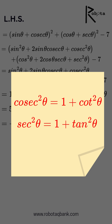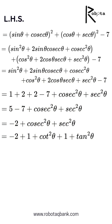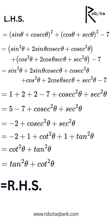And sec²θ = 1 + tan²θ. So we rewrite the expression as −2 + (1 + cot²θ) + (1 + tan²θ). Negative two plus one plus one gives zero, and we are left with cot²θ + tan²θ, which is equal to the right hand side of the equation.